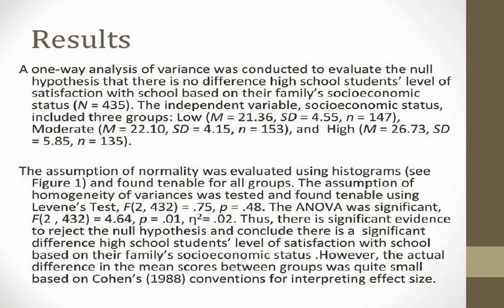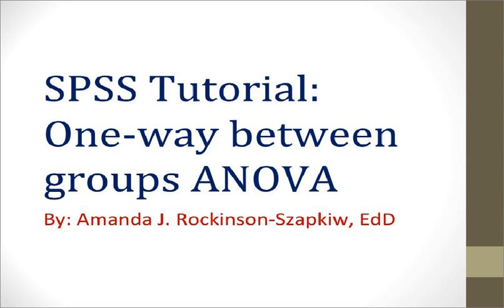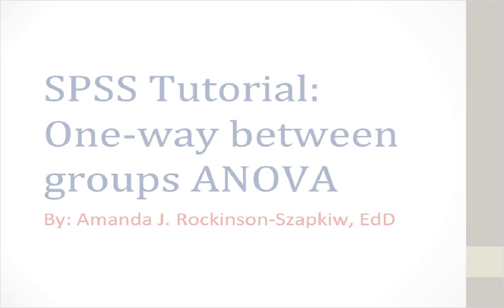Now that we have reviewed and discussed the SPSS output for a one-way between groups ANOVA, we can use this output to write an APA results section. One example is provided for you. Thank you for taking the time to complete this SPSS tutorial for the one-way between groups ANOVA. You should now know how to conduct a one-way between groups ANOVA using SPSS and use the SPSS output to write an APA results section.